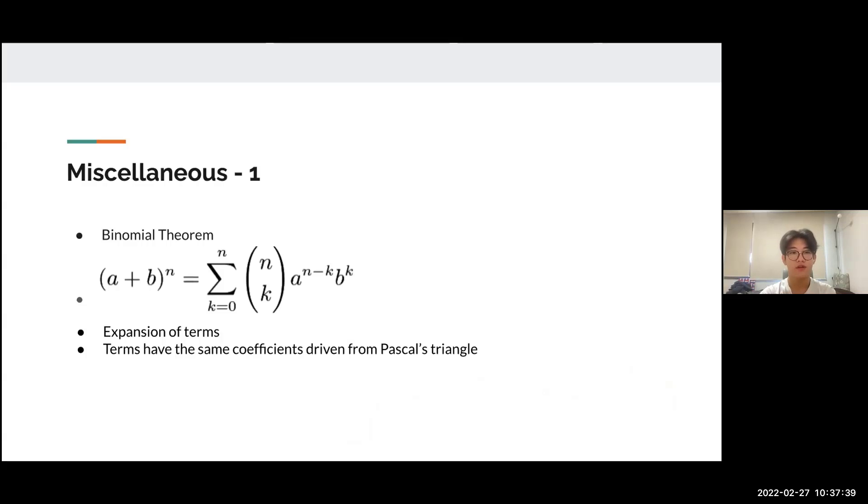Let's talk about miscellaneous topics. First is the binomial theorem, represented by the function shown. It tells us the expansion of terms. These terms have the same coefficients derived from Pascal's triangle. I'll talk about Pascal's triangle in the next slide.